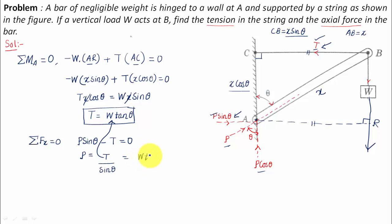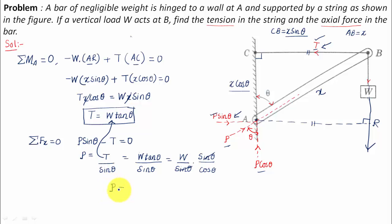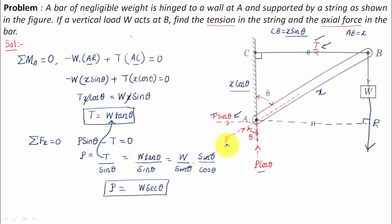Substituting T equals W tan theta: P equals W tan theta divided by sine theta. Since tan theta equals sine theta over cos theta, the sine theta terms cancel, leaving P equals W times one over cos theta, which equals W sec theta. The nature of this force is compressive — the weight W pulls the bar down, the bar pushes the wall, and the wall reacts, tending to shorten or compress the bar.